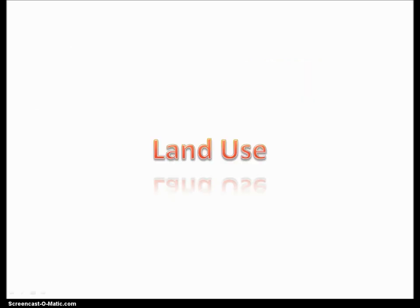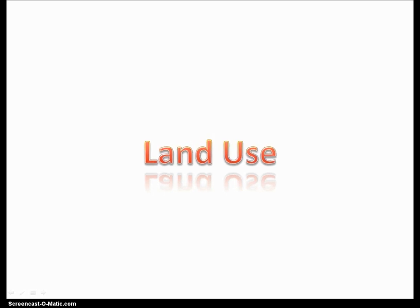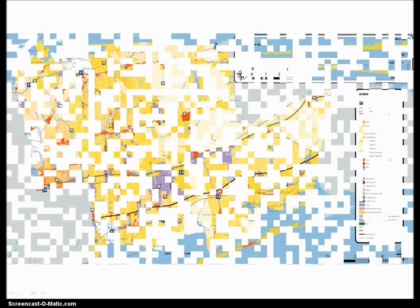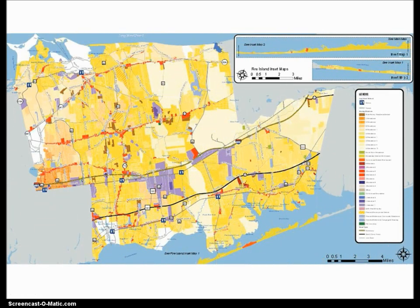By far, the most important thing the town government does is decide how land can be used. The planning board is an independent body comprised of seven members appointed by the town board. In this zoning map, purple is industrial, red is business or commercial, and yellow is residential.